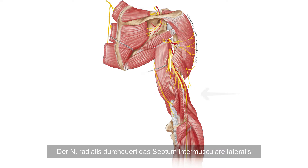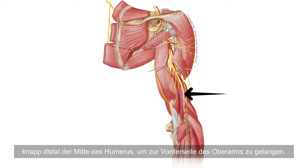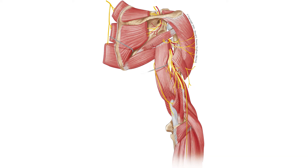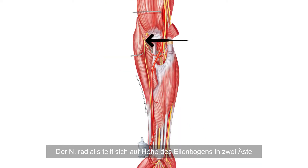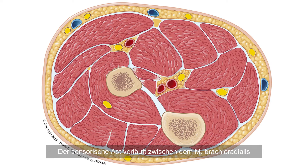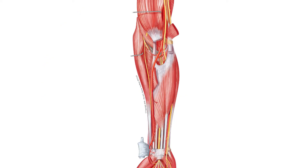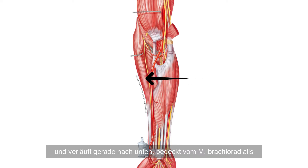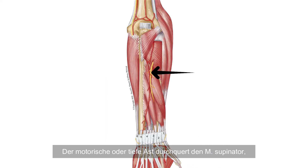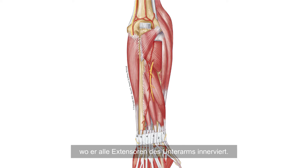The radial nerve crosses the lateral intermuscular septum just distally of the middle of the humerus to pass to the anterior side of the upper arm. It remains posterior to the brachialis muscle but anterior to the humerus. It divides at the level of the elbow into two branches: the sensory or superficial branch and the motor or deep branch. The sensory branch passes between the brachioradialis and the extensor carpi radialis longus muscle and travels straight down, covered by the brachioradialis muscle, towards the back of the hand, where it innervates the dorsal aspect of the thumb, the index and middle finger. The motor or deep branch crosses the supinator muscle, where it innervates all the extensors of the forearm.